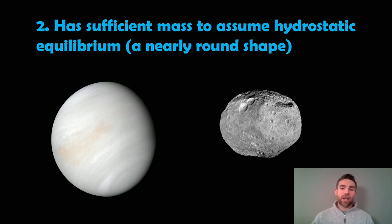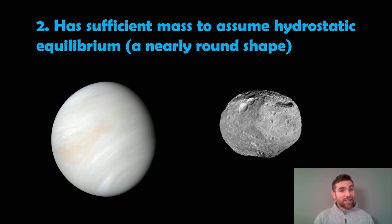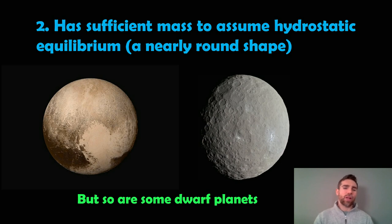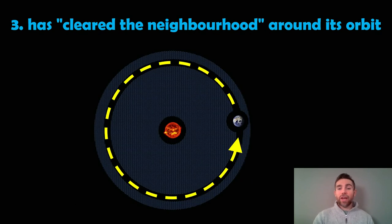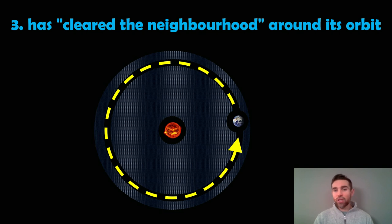We do have dwarf planets and moons that are spherical, so this is one of the criteria for what a planet is. You've got dwarf planets like Ceres and Pluto — these are dwarf planets, they're not planets. They also orbit the sun, so they hit two of the criteria straight away. However, the one that they typically fall down on is that they have to clear their neighborhood around their orbit, meaning they will not share their orbit with other smaller objects.